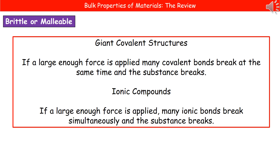If we consider the giant covalent structures, then if we apply a large enough force, many covalent bonds will break at the same time, and that means the substance is going to break, making it brittle. If we consider our ionic compounds, we find the same situation — the ionic bonds are going to break simultaneously. So both giant covalent structures and ionic compounds are likely to be brittle, because when we apply enough force, many bonds break simultaneously and the structure breaks apart.